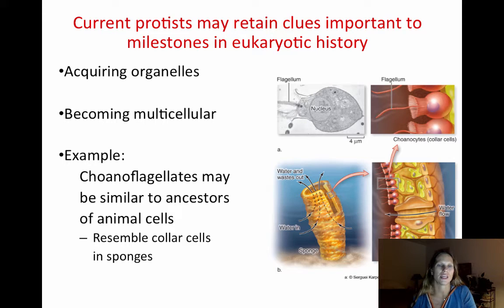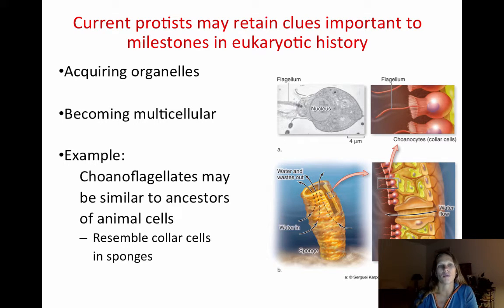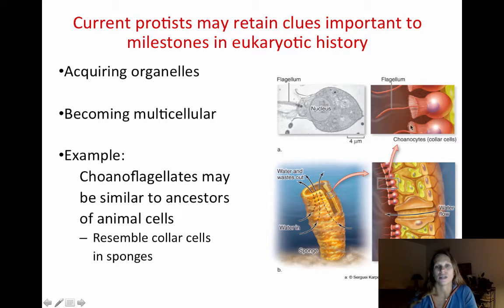We kind of think that protists give us some pretty important clues in terms of the origin of all eukaryotes. What we started seeing with the protists is the acquisition of more organelles, and the transition from being unicellular to multicellular. An example we use sometimes are these things called choanoflagellates, which you can see on the picture there. Choanoflagellates are our most animal-like protists, and they start to look a lot like sponges, which is an animal. We'll learn about these guys later on.